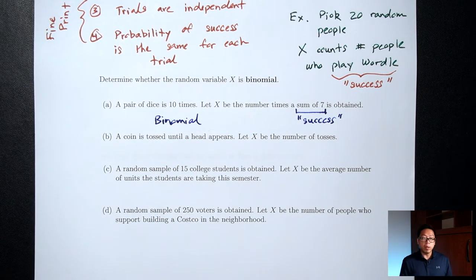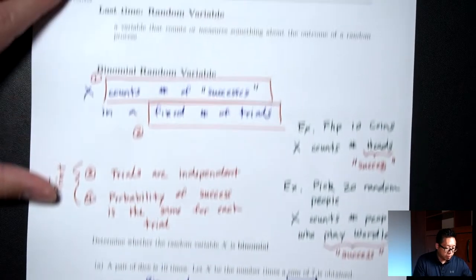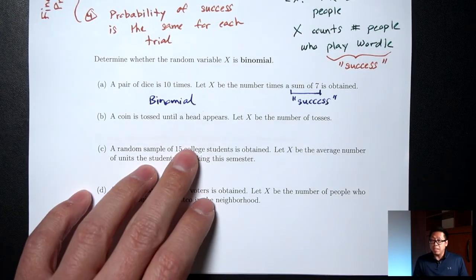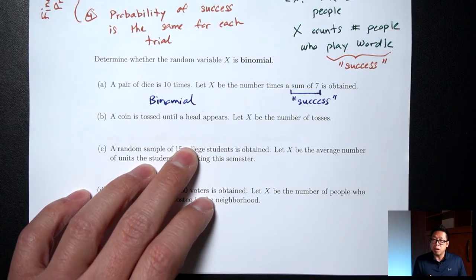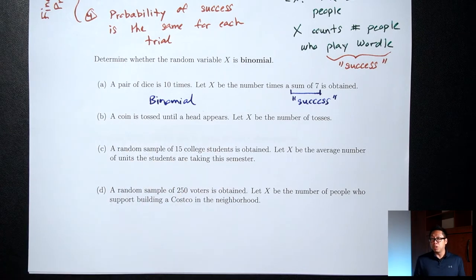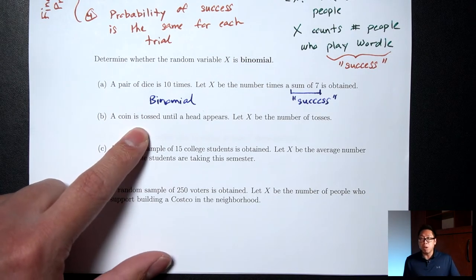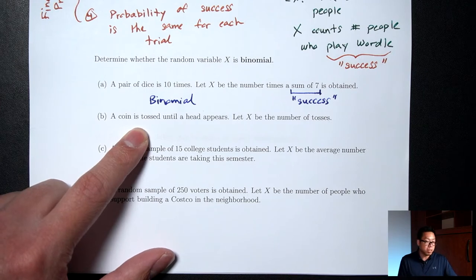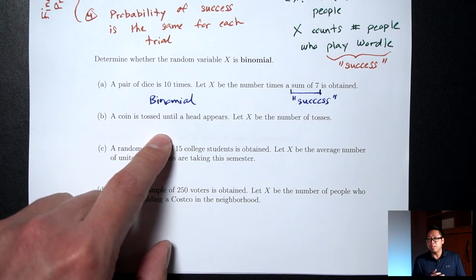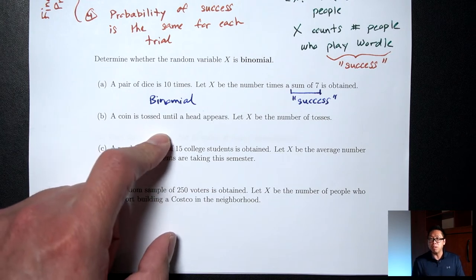Part B: a coin is tossed until a head appears. Is the number of trials fixed? There's nothing specifying how many times we're flipping the coin — we flip until a head appears, which could mean the first try, second try, or maybe 10 tries. The number of trials is not fixed, so this is not binomial because the number of trials is not fixed.